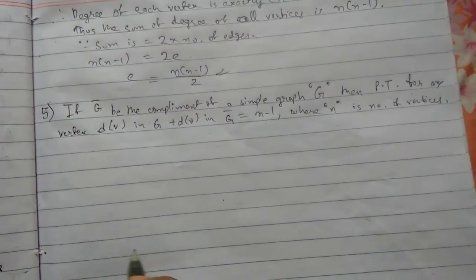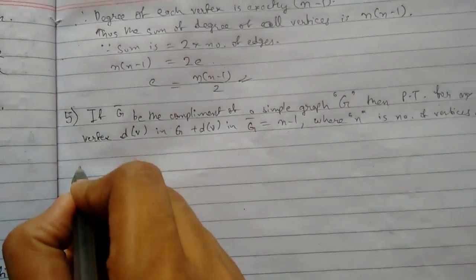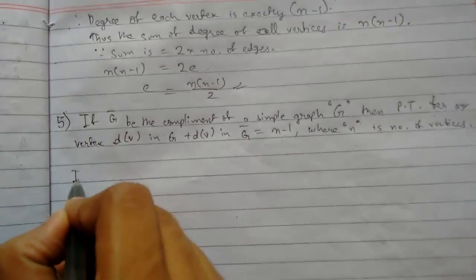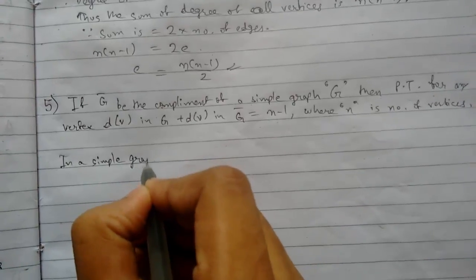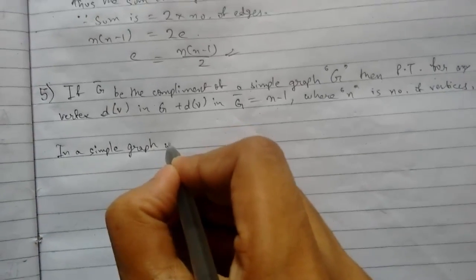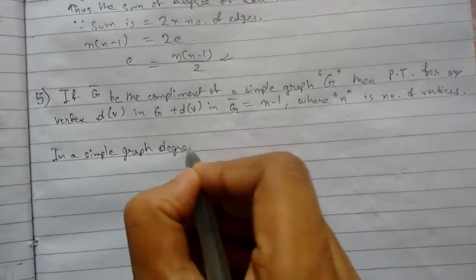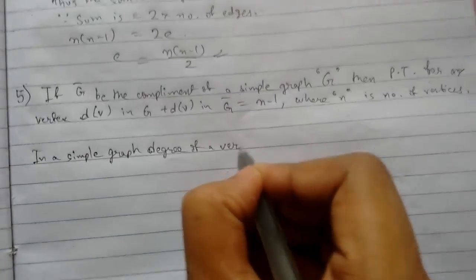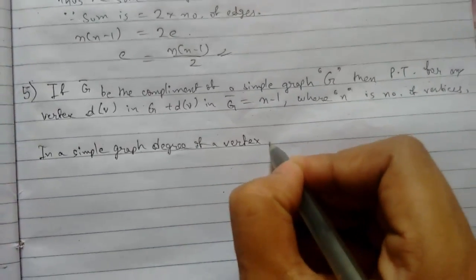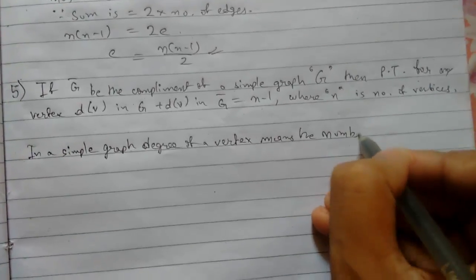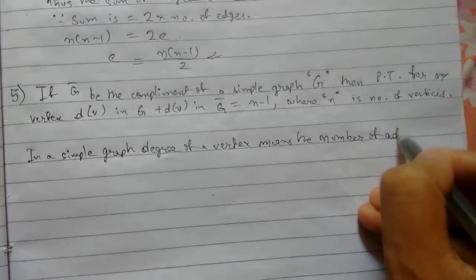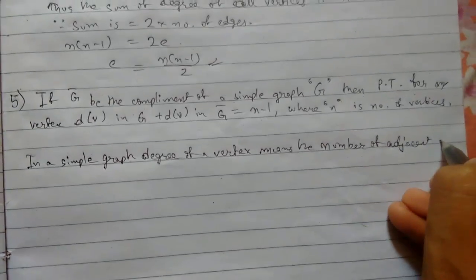Let us prove. First we will start like this. In a simple graph, the degree of a vertex means the number of adjacent vertices.